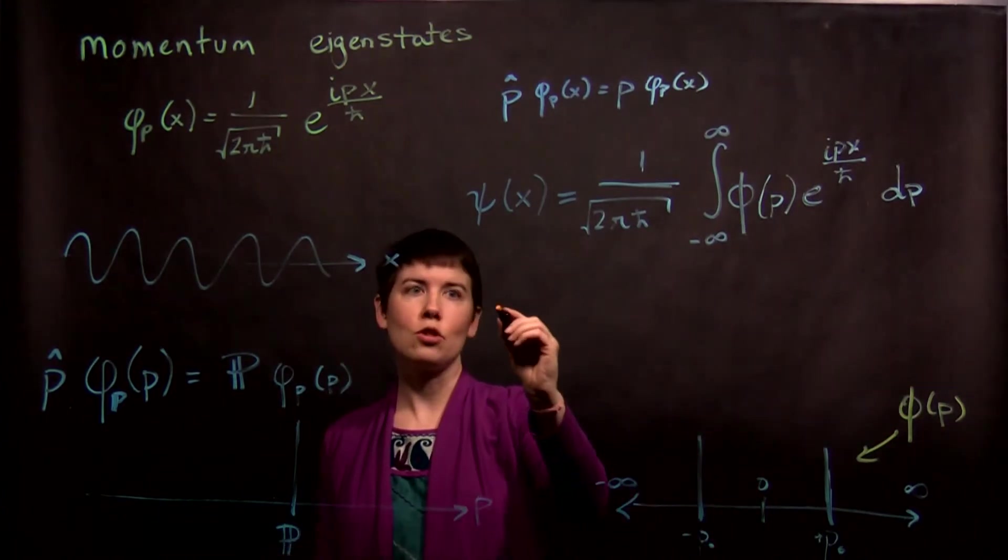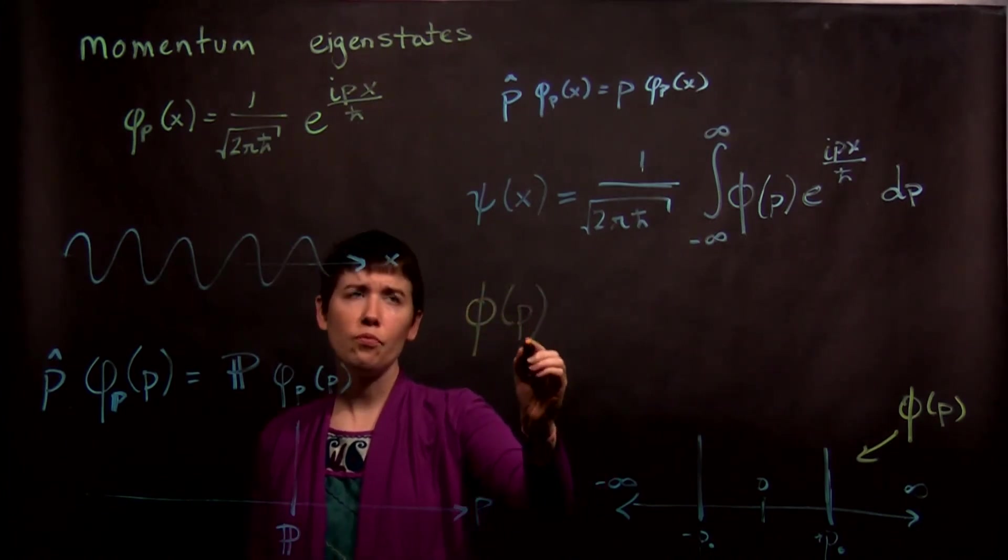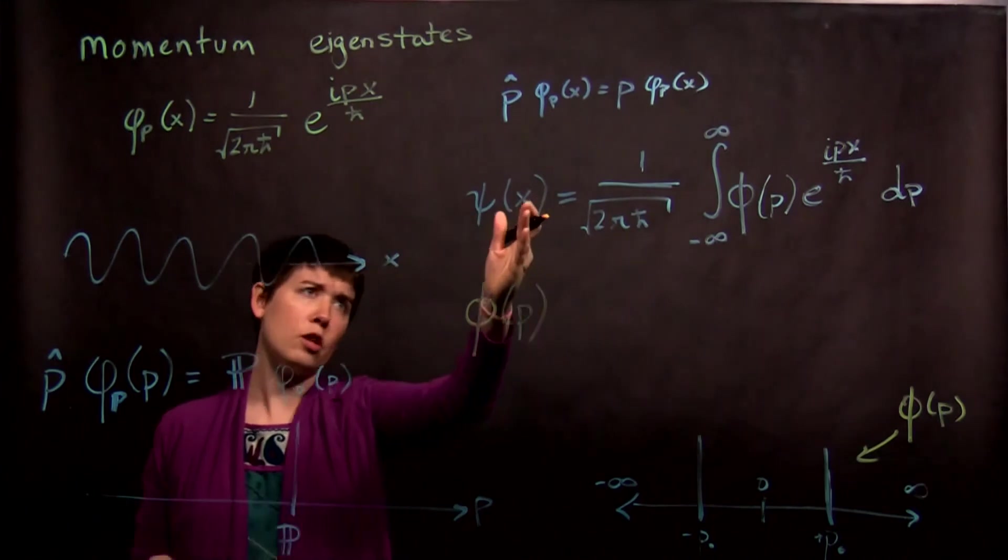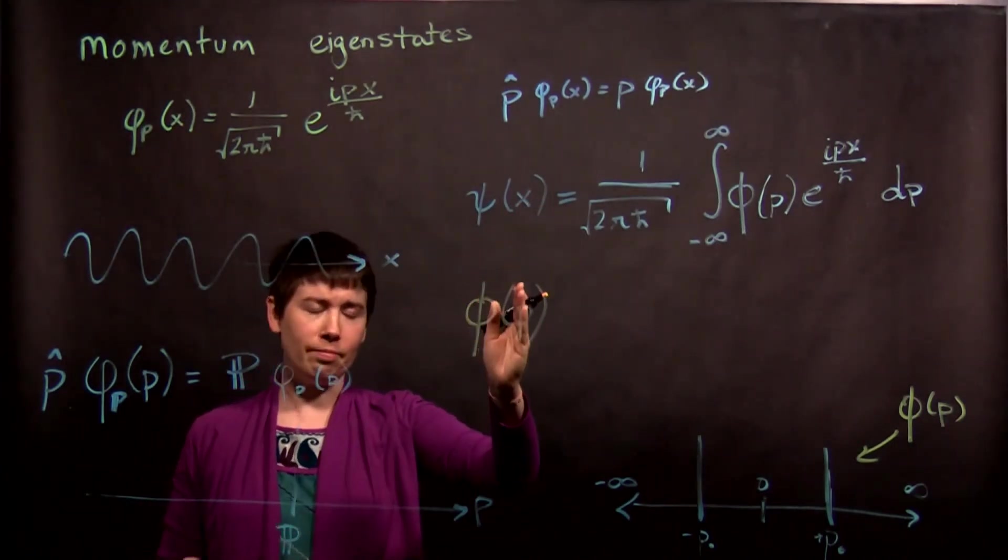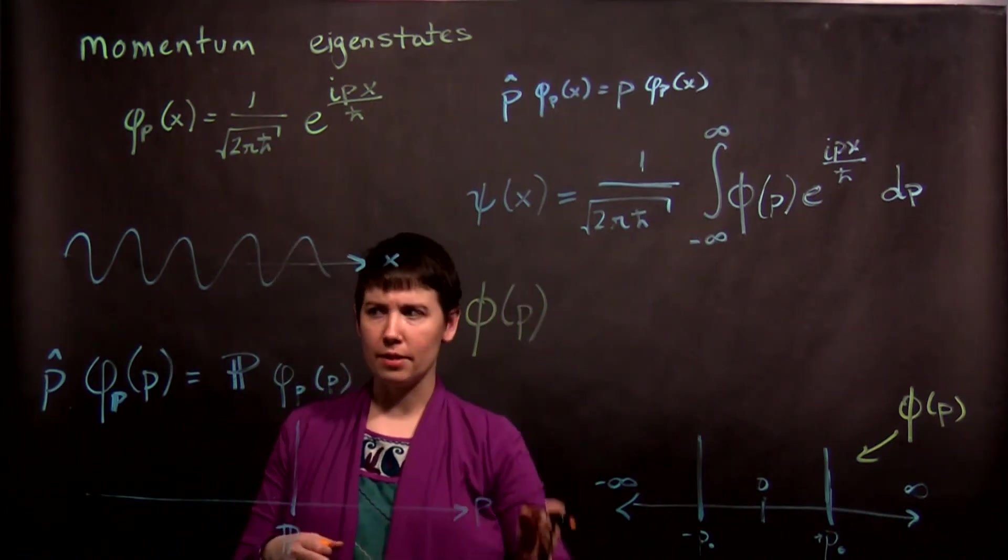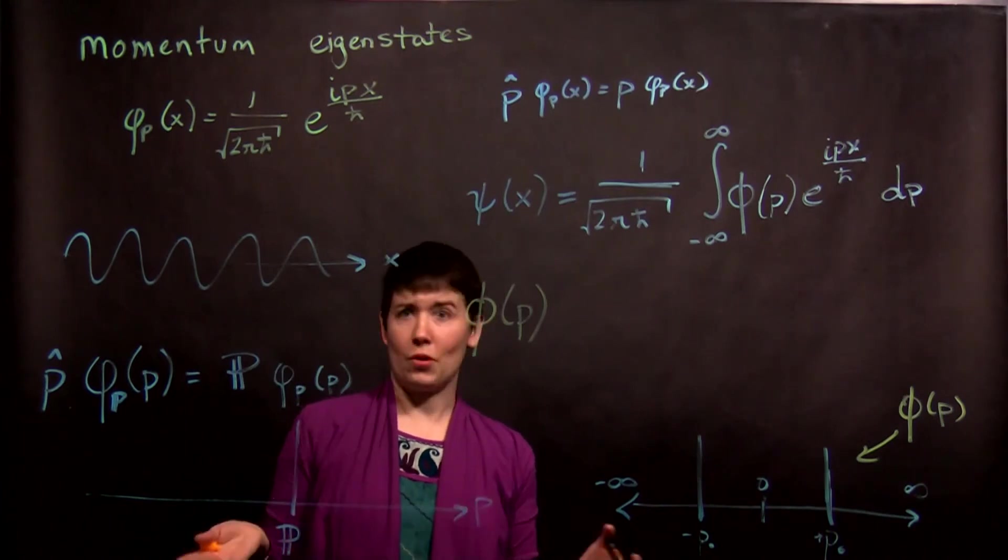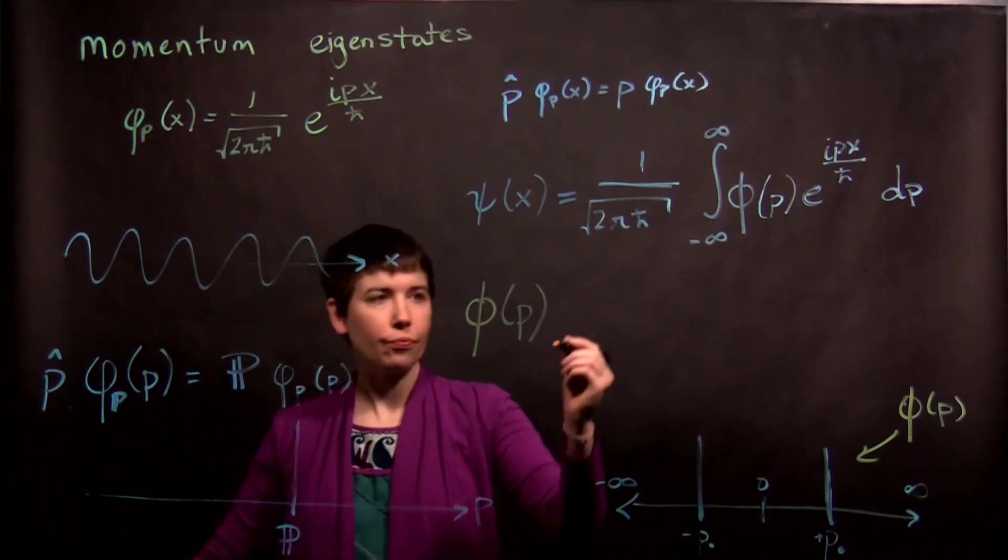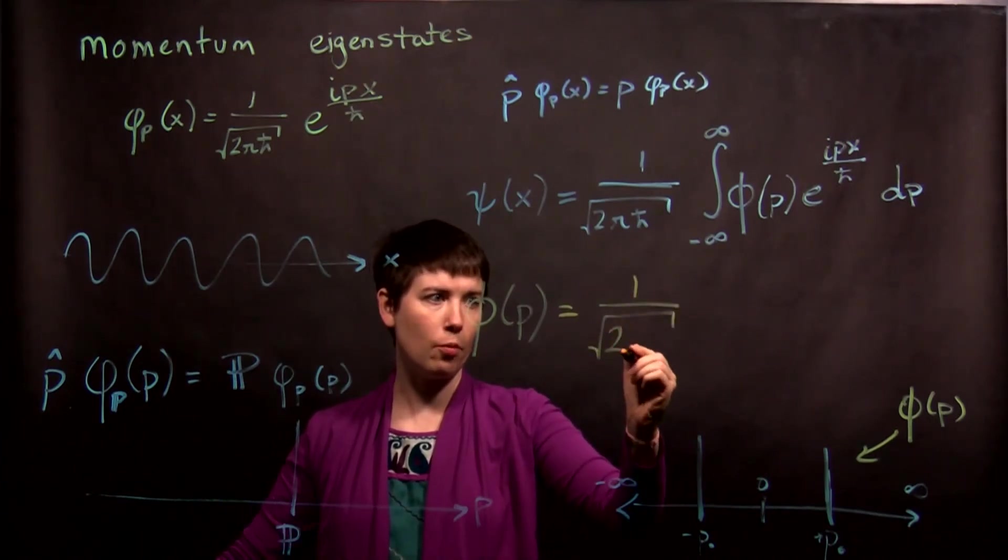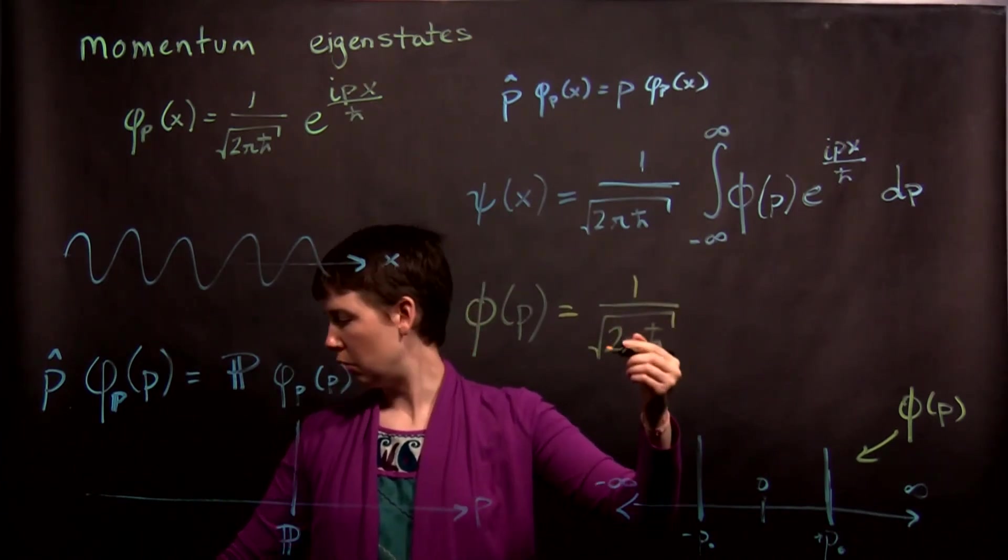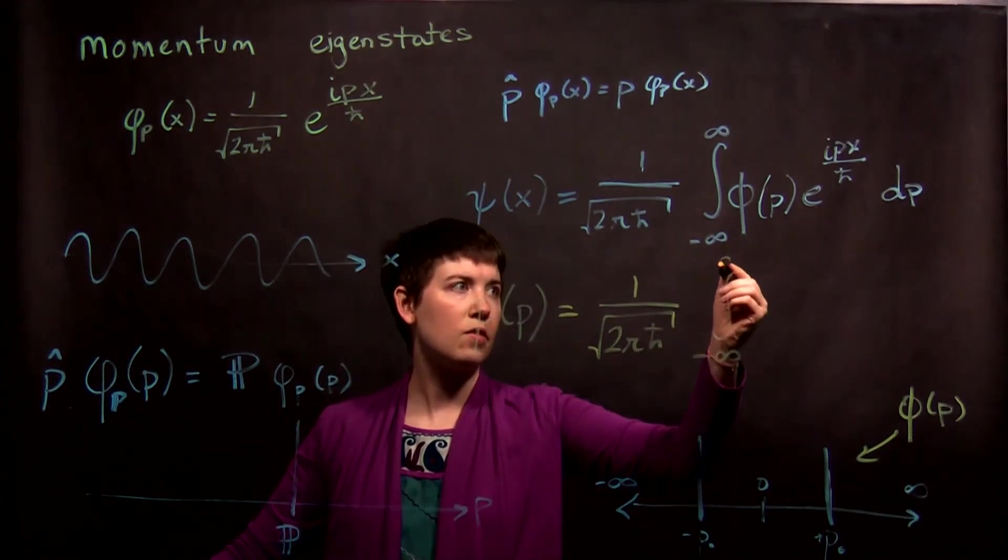Now we can go in the opposite direction, which sometimes you want to do. And again, notice here that I'm using psi for a general wave function of position. I'm using phi for a general wave function of momentum. But there's a slightly different phi that we're using for our eigenstates. I'm sorry. So we have the same normalization coefficient. So if you ever get this memorized, you only have to memorize one.